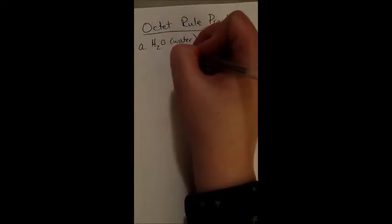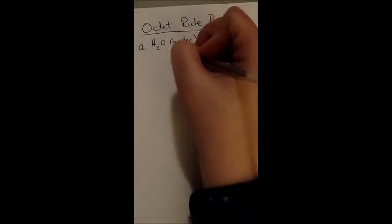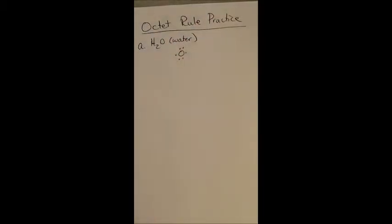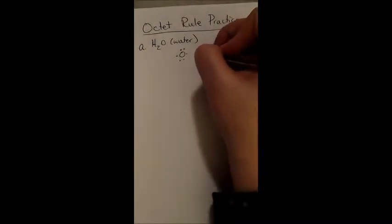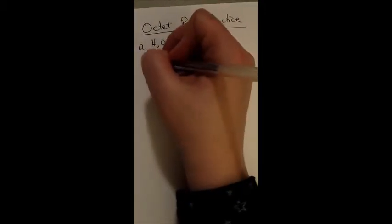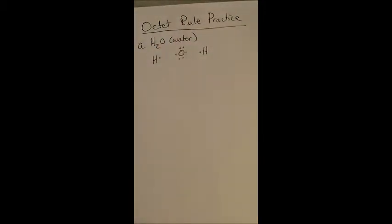If we take our oxygen, start out with that, and we've got one, two, three, four, five, six electrons in our valence shell, in our Lewis dot structure. This is for oxygen. We also then have our hydrogen with one and our other hydrogen with another one.